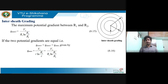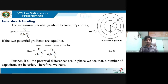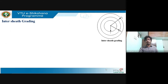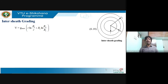When the two potential gradients are equal — g_max1 = g_max2 — we get: v1 / (r × ln(r1/r)) = v2 / (r1 × ln(r2/r1)). If all potential differences are in phase, the capacitors are in series, so V = v1 + v2. On equating, the total voltage is: V = g_max × [r × ln(r1/r) + r1 × ln(r2/r1)].